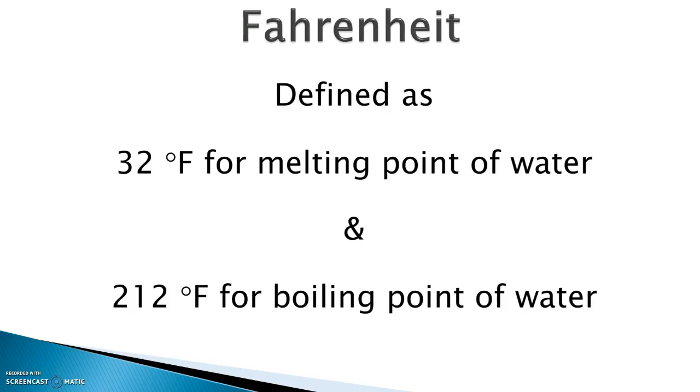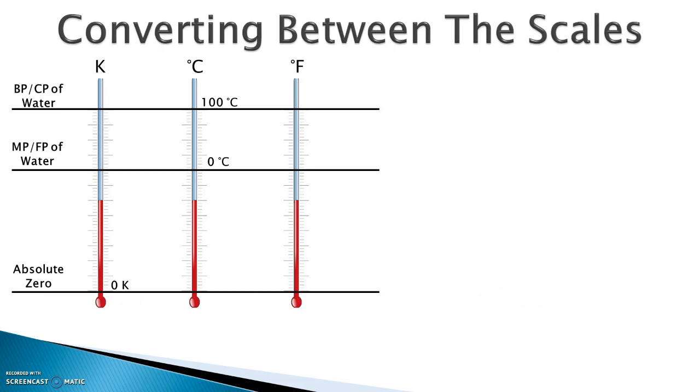Let's look at three different thermometers all representing different scales. We have Kelvin on the left, Celsius in the middle, Fahrenheit on the right. We have up top the boiling point and condensation point of water. We have the melting point and freezing point of water below that. All the way down here is absolute zero. Absolute zero is going to be represented by zero Kelvin, just like we mentioned earlier. The melting point of water is zero degrees Celsius, the boiling point is 100 degrees Celsius.